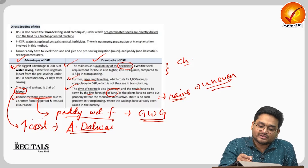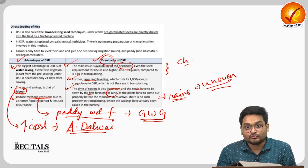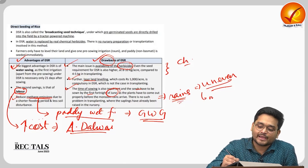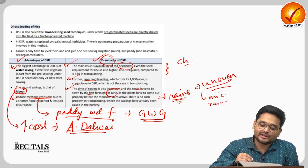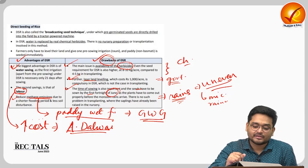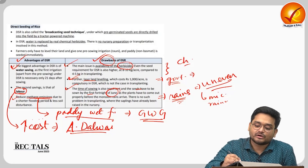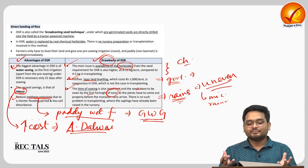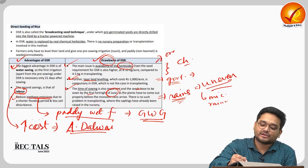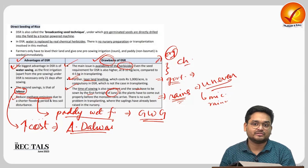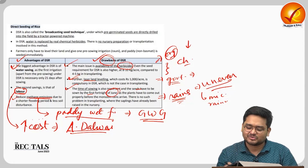Despite these drawbacks, DSR saves water, which is a very valuable resource. The monsoon dependency problem can be addressed using micro-irrigation and rainwater harvesting. The laser land leveling challenge can be solved through government initiatives — the government can provide incentives or set up institutions that rent out this equipment to farmers. Under organic and natural farming, local plant species resistant to weeds can reduce the need for chemical herbicides.